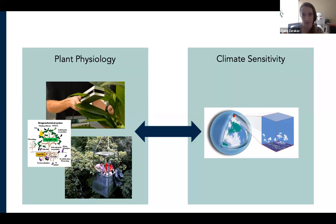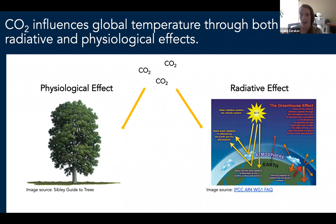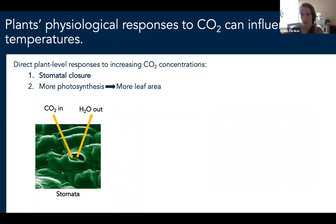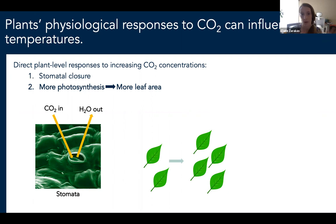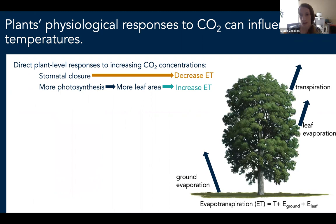These topics are connected because increasing CO2 alters global temperature through both the radiative effect of CO2 and through plants' responses at the land surface. Plants have two main relevant responses to increasing CO2: first, plants generally close their stomata, and secondly, plants can grow more leaves. These plant responses influence land temperatures because they can influence evapotranspiration. Stomatal closure will decrease evapotranspiration, while leaf area increases will increase evapotranspiration, all else being equal.